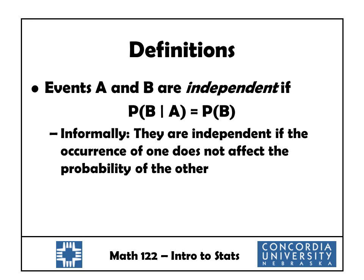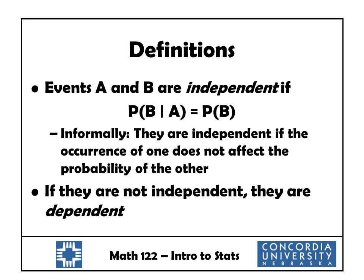So this leads us to our formal definition of independent and dependent. We say events A and B are independent if the probability of B, given that A has occurred, equals the probability of B. This is just a formal way of defining what it means that the one has no effect on the other. Informally, this definition says that they are independent if the occurrence of one does not affect the probability of the other. Now, if they are not independent, they are said to be dependent — dependent is just the opposite of independent.